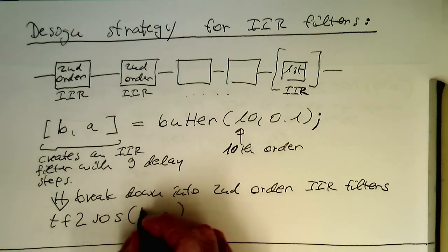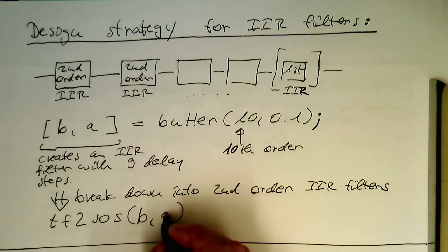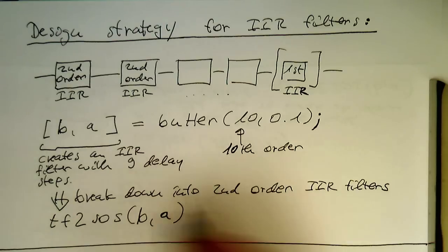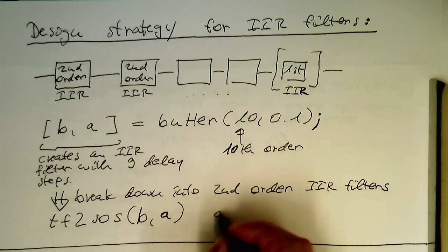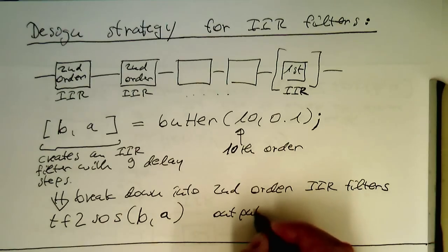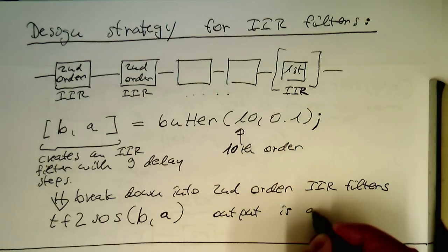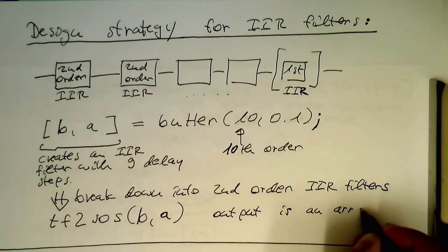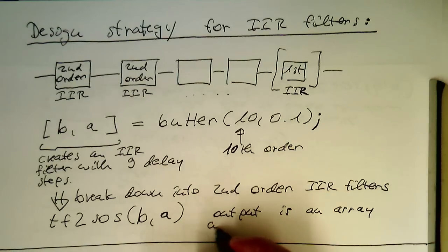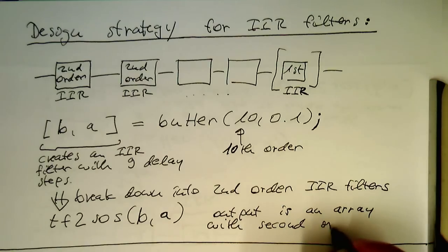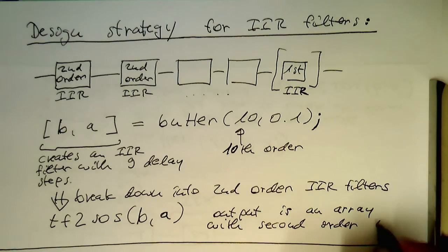These are our input coefficients here, and then the output here. Output is an array with second order IIR filters.